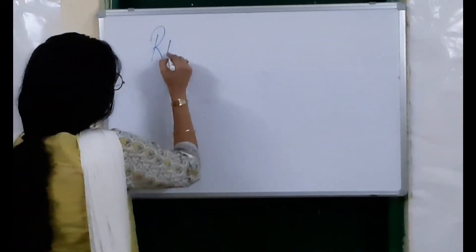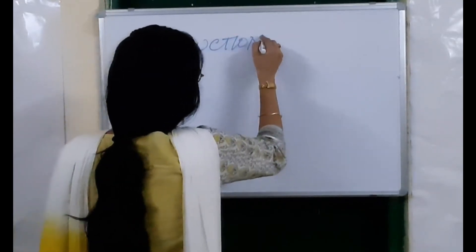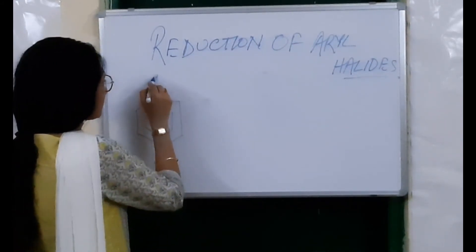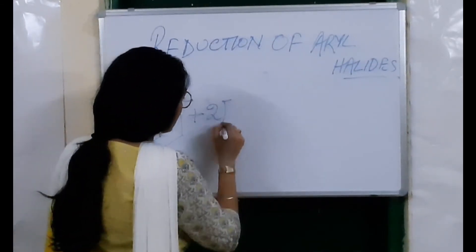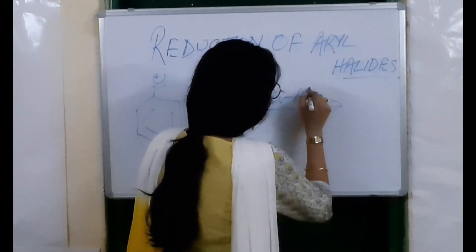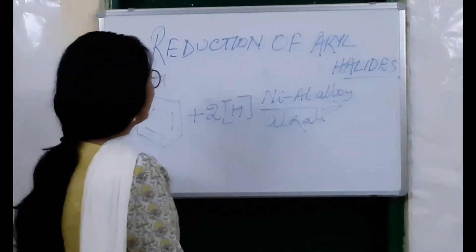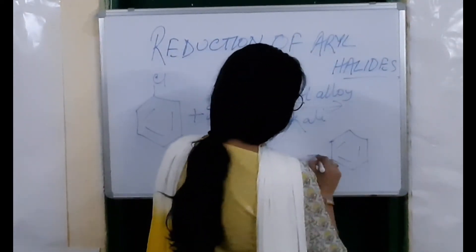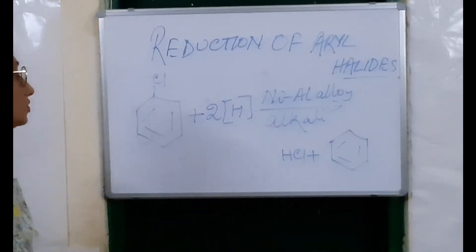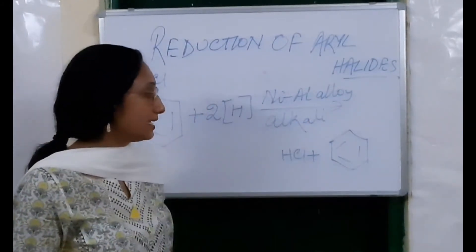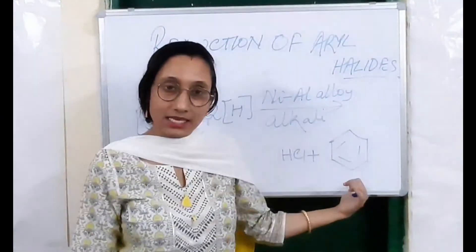Our next reaction is the reduction of aryl halides. Suppose we take chlorobenzene — when you reduce it with nickel-aluminum alloy in the presence of alkali, we will get benzene plus HCl. So chlorobenzene on reduction with nickel-aluminum alloy and alkali gives benzene plus HCl, meaning aryl halides on reduction give you the aromatic hydrocarbon.